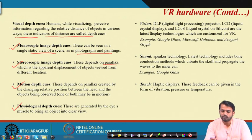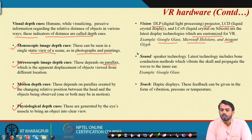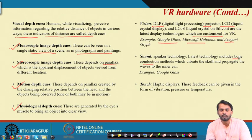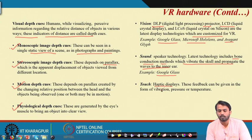Apart from visual depth cues, let us see vision, sound, and touch hardware important for VR. For vision, DLP (digital light processing) projectors, LCD (liquid crystal display) projectors, or LCOS (liquid crystal on silicon) display techniques customized for VR are used — examples include Google Glass, Microsoft HoloLens, and Avegant Glyph. For sound, speaker technology is used, with bone conduction being a major breakthrough — it vibrates the skull to propagate waves into the inner ear. For touch, 6 or 8 degree-of-freedom haptic devices are used, providing feedback in the form of vibration, pressure, or temperature.